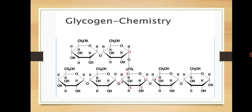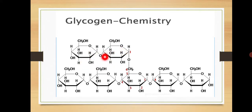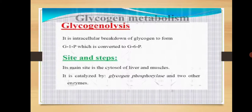This is the structure of glycogen. Glycogen is composed of glucose residues. These glucose residues are linked by alpha-1,4 glycosidic bonds. It consists of branches, and these branches are connected together by alpha-1,6 linkage — same as that of starch.